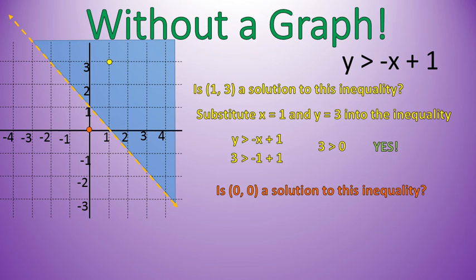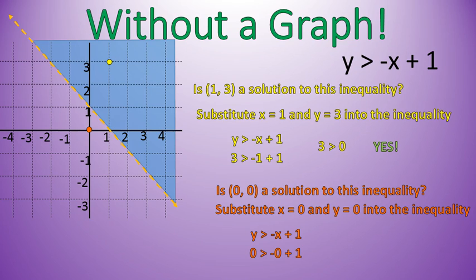Next question: is (0, 0) a solution? We know the answer is no, but let's go ahead and do the math. We'll substitute x equals 0 and y equals 0 into this inequality. 0 is greater than negative 0 plus 1. Negative 0 is just 0. So 0 plus 1 is 1. 0 is greater than 1. No, it's not. So when the statement is false, as it is here, then we can know it is not a solution to the inequality.